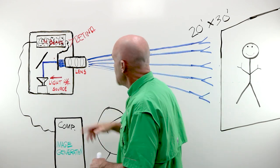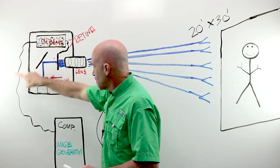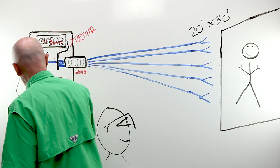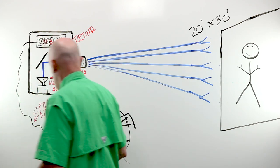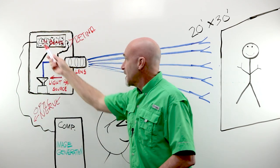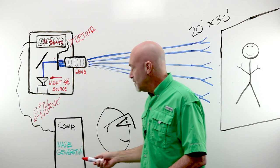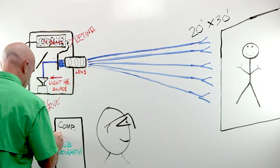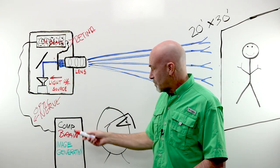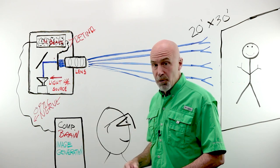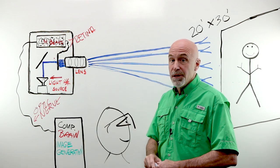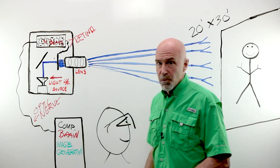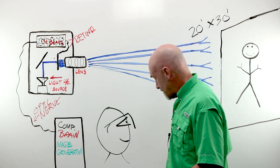And then it passes through not a cable, but the optic nerve. And what does that cable connect to? It connects to our computer — our brain. Our brain is our image generator. It's why we say we see with our brains, not with our eyes.